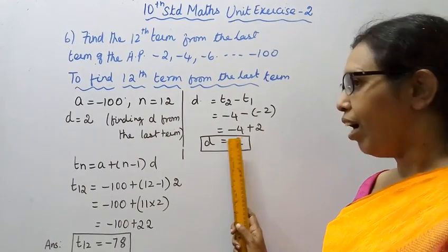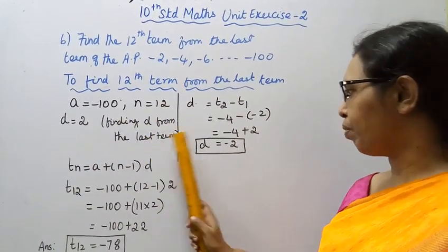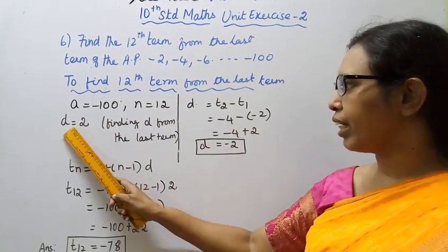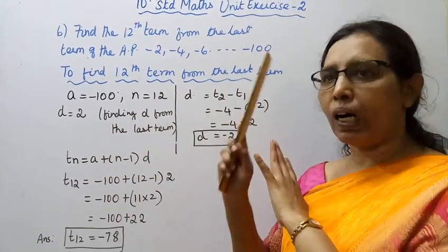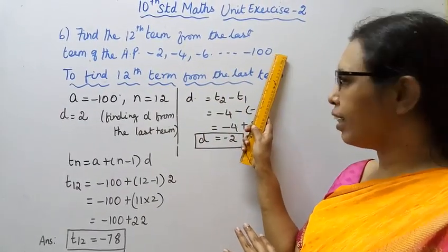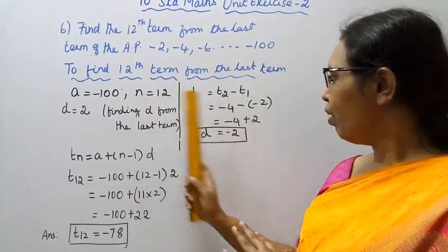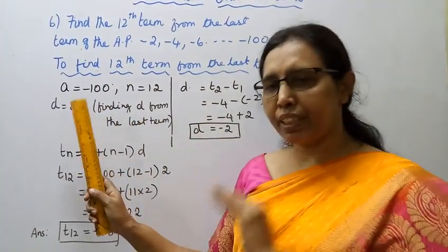But when finding d from the last term, the sign becomes opposite - it's plus 2 instead. When working from the last term backwards, d changes to the opposite sign.